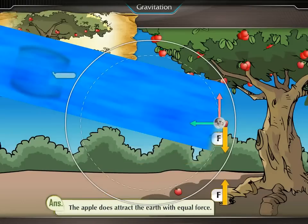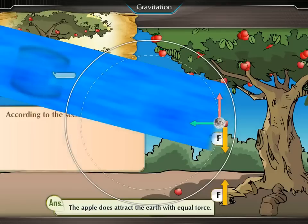The apple does attract the earth with equal force. But according to the second law of motion, for a given force, acceleration is inversely proportional to the mass of an object.